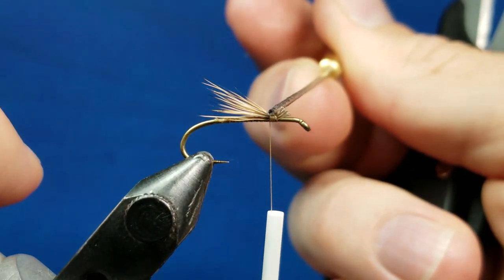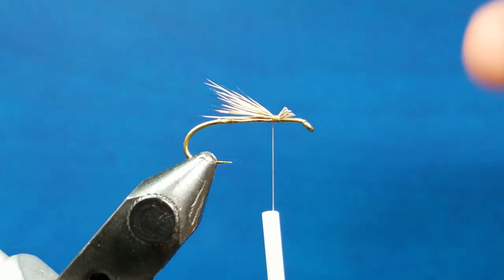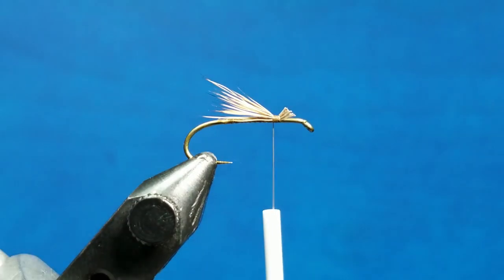And I'm going to also come underneath and get that right where it touches on the hook shank. Those two things are really helpful as far as just increasing the longevity of the fly in the water, especially once you start to get into fish.